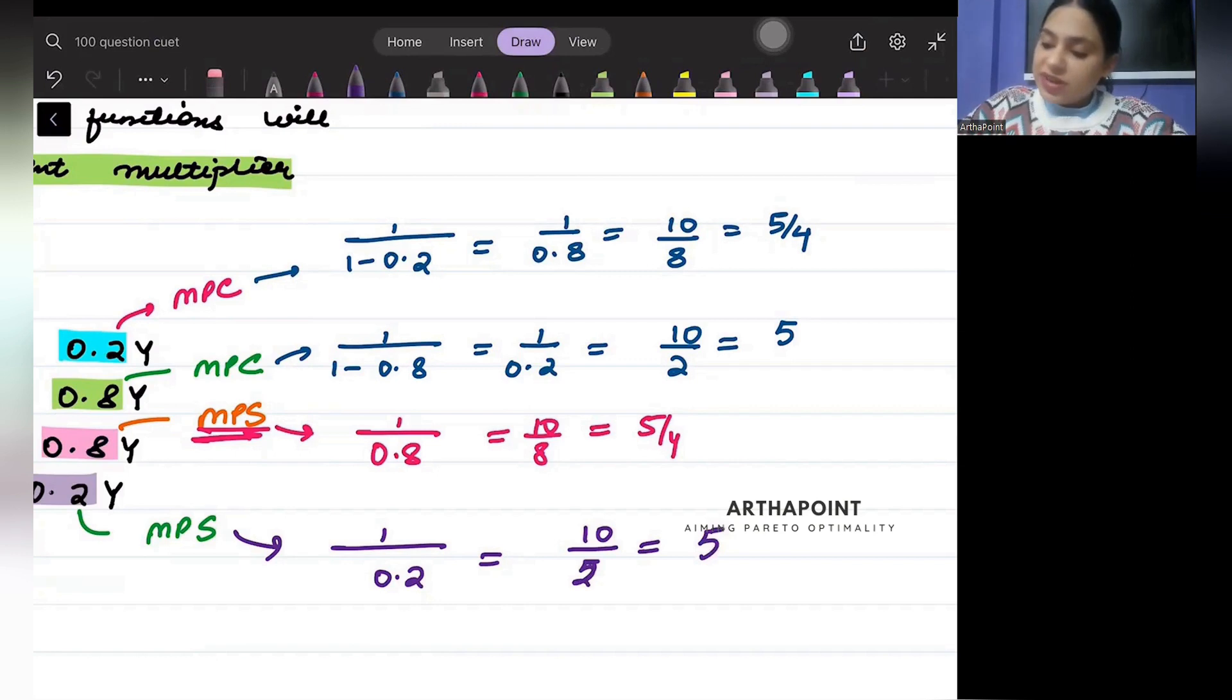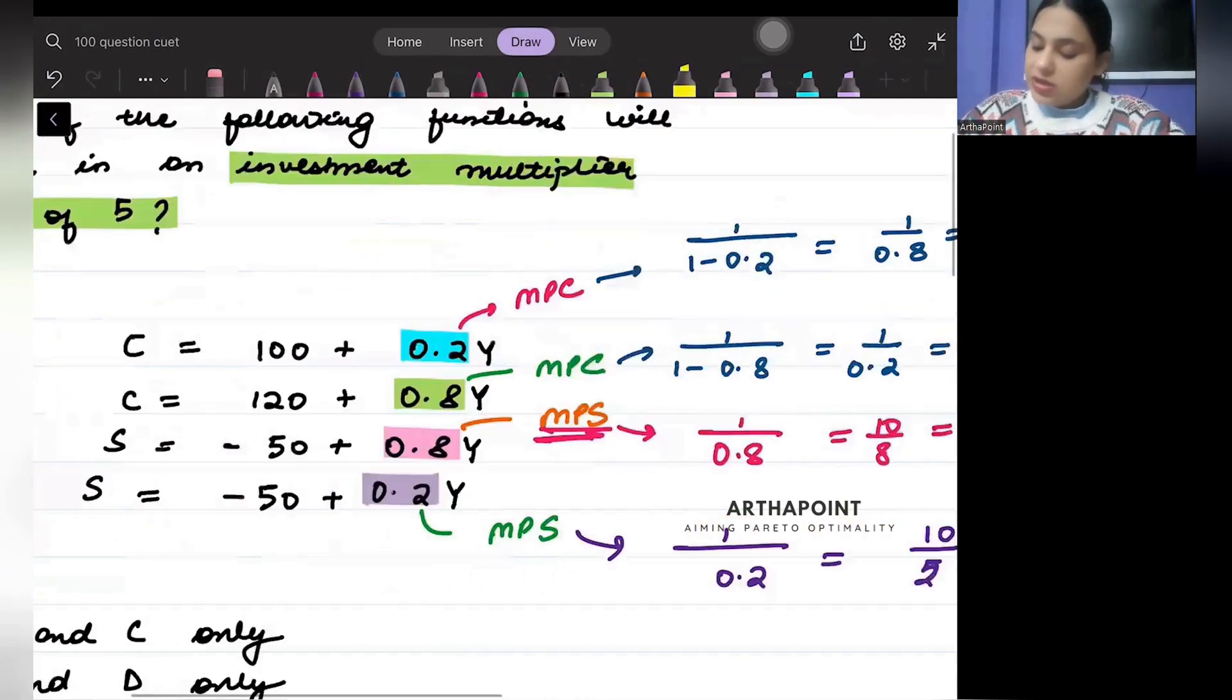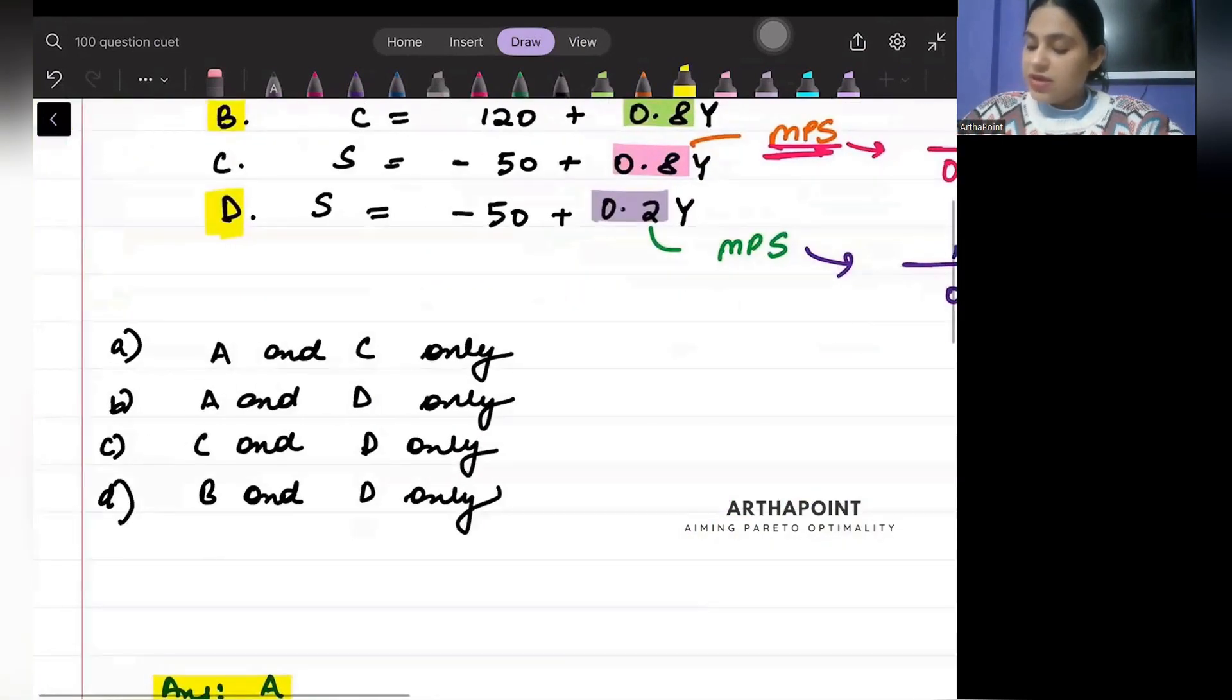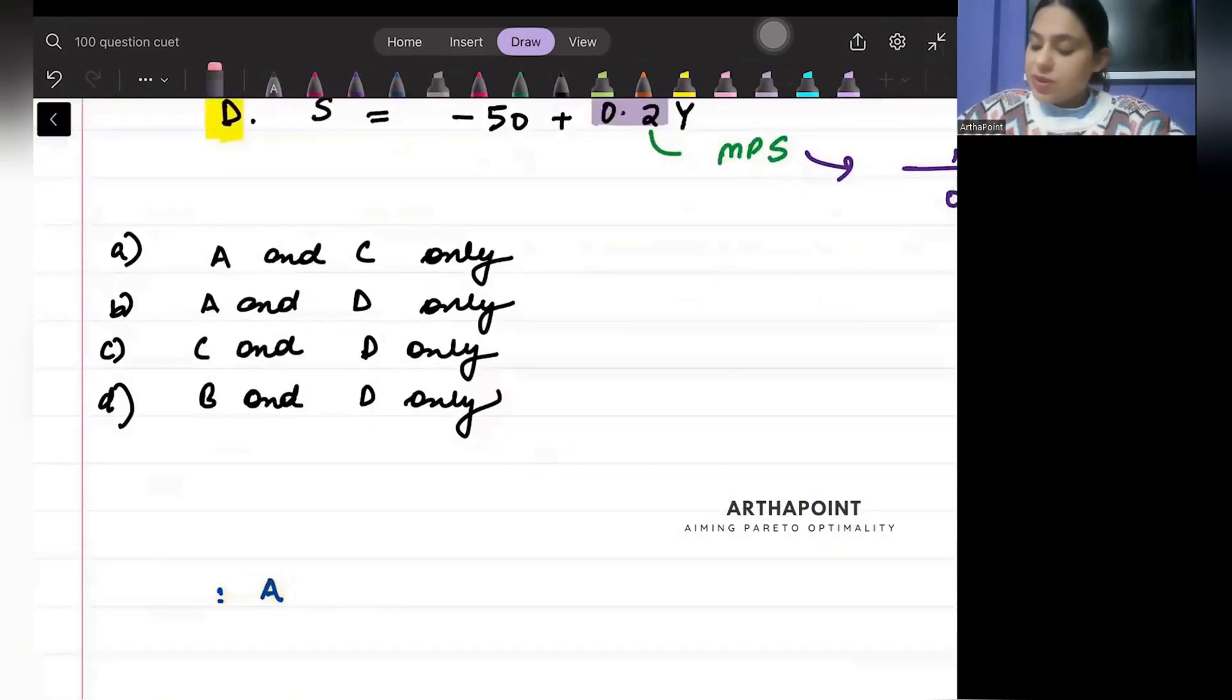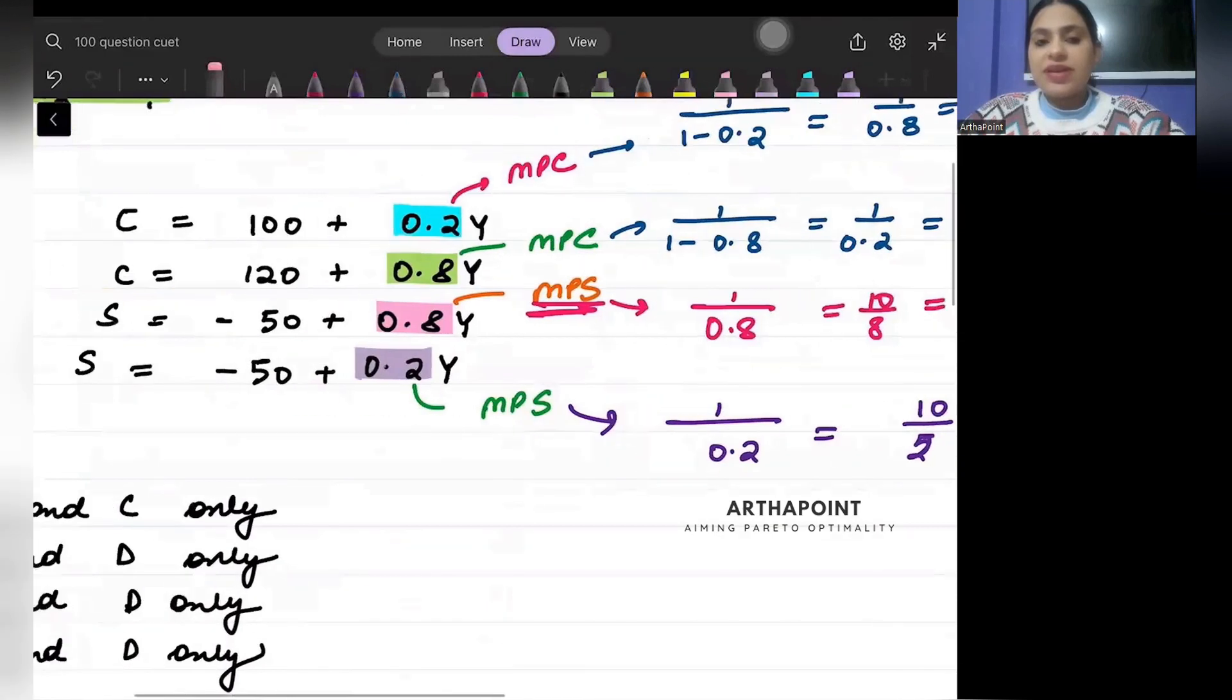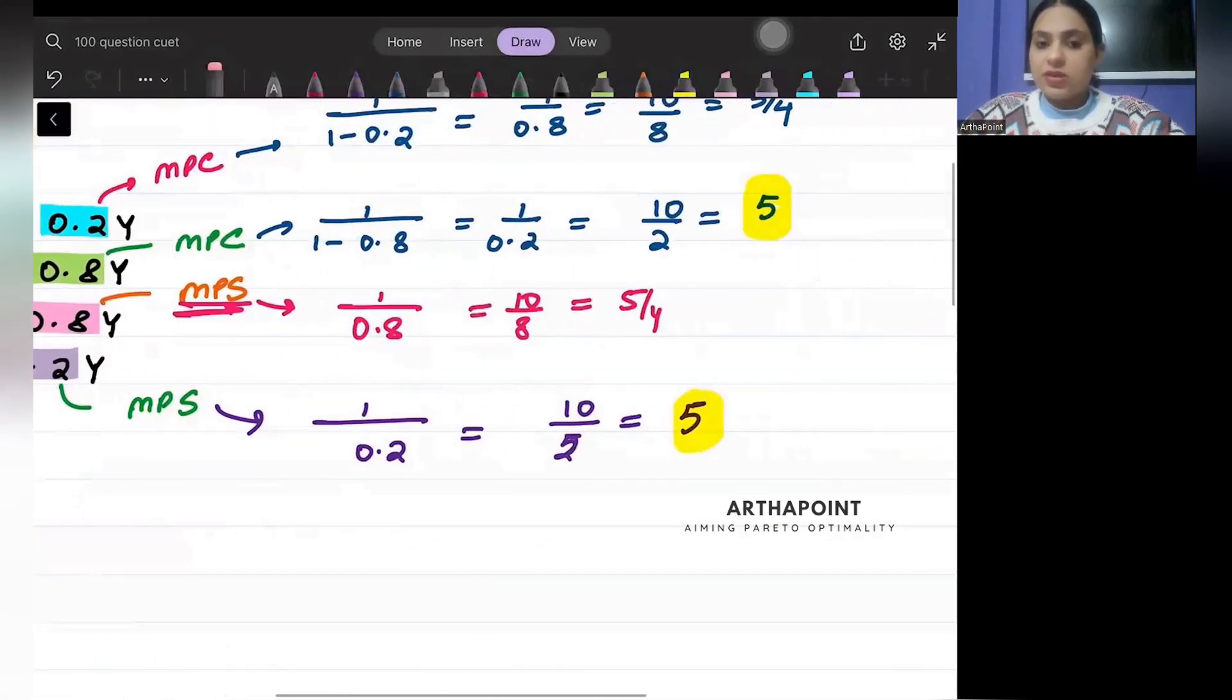So where am I getting the multiplier as 5? In answer number B and D. In answer number B and D, that is where my multiplier is 5.